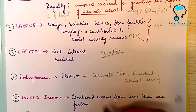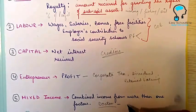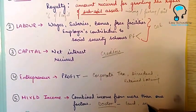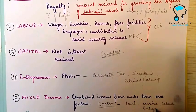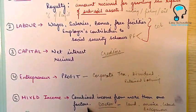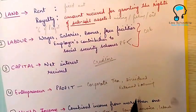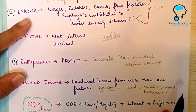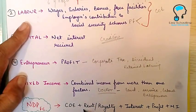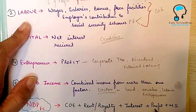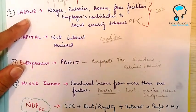Mixed income is the combined income from more than one factor. For example, a doctor with his own clinic earns income from his land, his building, his labor as a service provider, and as an entrepreneur — so that is a mixed earning, classified under mixed income. When you add all five components — compensation of employees, rent and royalty, interest, profit, and mixed income — you get NDP FC.